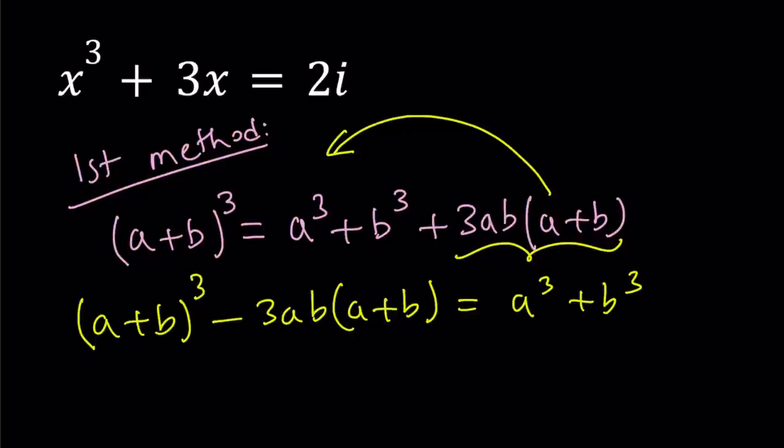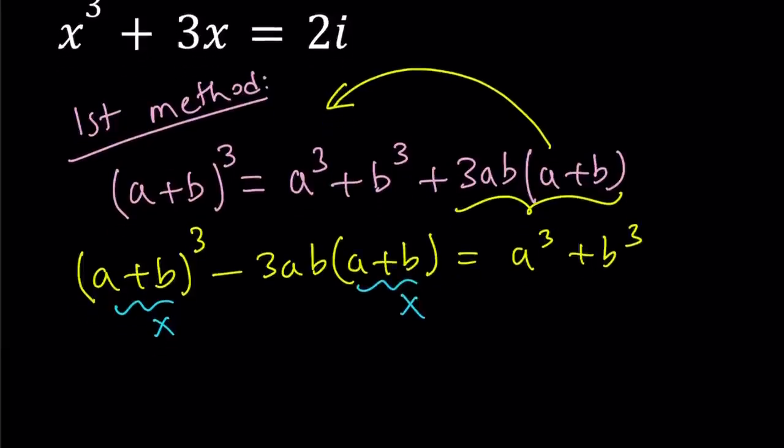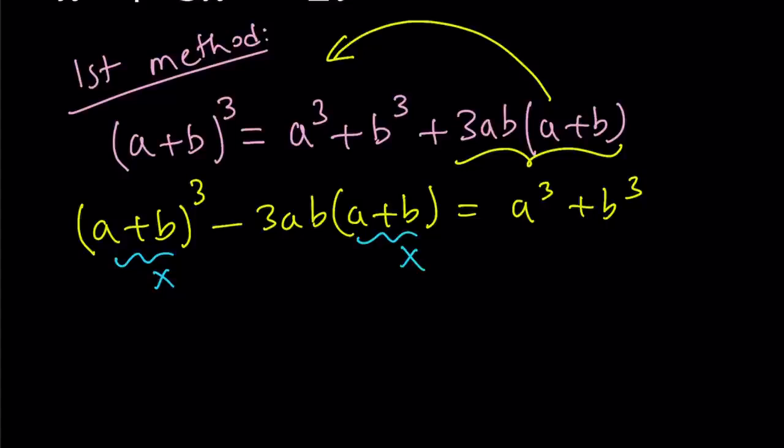It's kind of nice because I can go ahead and take this term here and move it to the left. I can subtract it and leave the a³ + b³ alone. So (a+b)³ - 3ab(a+b) is equal to a³ + b³.